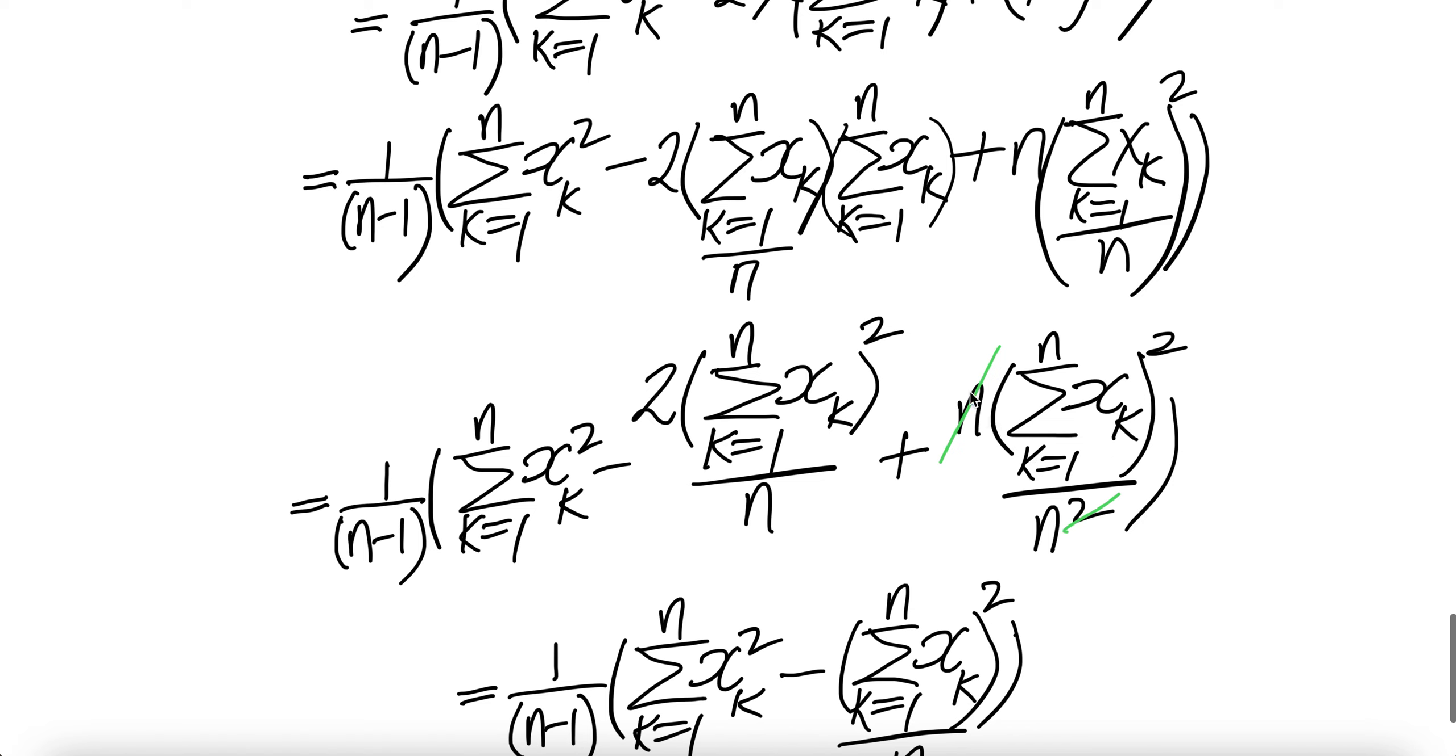Square this, you get this thing square, divided by n square. Cancel one of the n. And then this piece, this and that, the same. Combine them, you write x square.